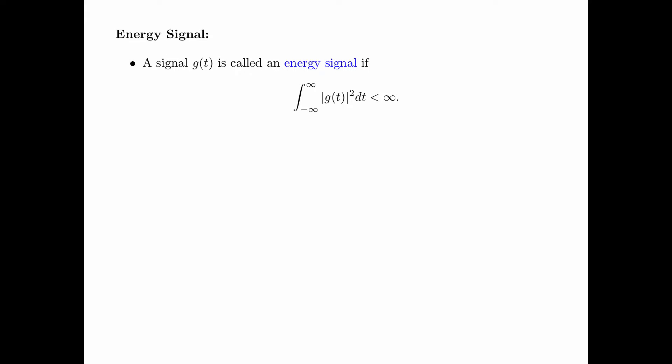There is a certain type of signals which is of special interest. A signal g of t is called an energy signal if the integral of the magnitude squared of the signal from minus infinity to infinity is finite — in other words, the energy of the signal is finite. An important property of an energy signal is that the Fourier transform exists.